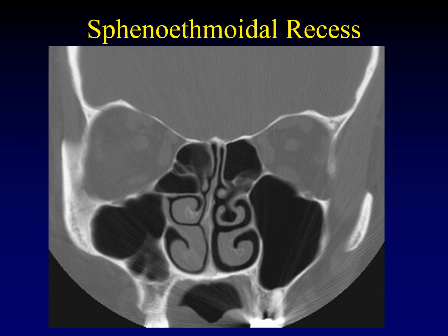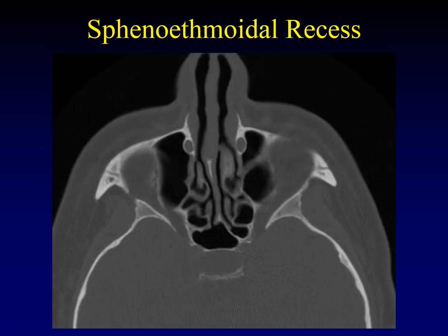The sphenoethmoidal recesses are more posterior. Here you can see the sphenoid sinus draining through the sphenoethmoidal recess, ending up in the superior meatus, with a couple of posterior ethmoid air cells joining in — same on the other side. Most anatomy in the nasal cavity is best seen in the coronal plane, but the sphenoethmoidal recess is perhaps better analyzed on axial images. On axial images you can clearly see the sphenoid sinus, its os, and the sphenoethmoidal recess with posterior ethmoid air cells joining in. If you're having trouble finding this structure on coronal images, axial images will come through for you.